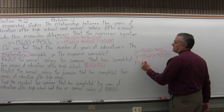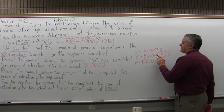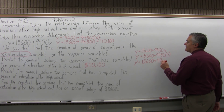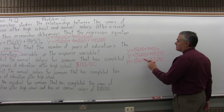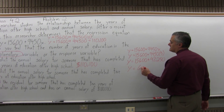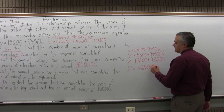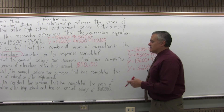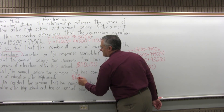So I will leave the y equals 15,600 for a minute and do 9,450 times 5, which is 47,250. Then I add 15,600 plus 47,250 and get a predicted salary of $62,850. For somebody who has had five years of education after high school, their predicted annual salary will be $62,850.